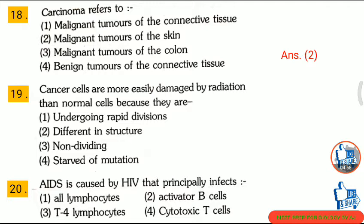Question 19: Cancer cells are more easily damaged by radiation than normal cells because they are — first, undergoing rapid division; second, different in structure; third, non-dividing; fourth, subject to mutation. The correct answer is option 1: undergoing rapid division.